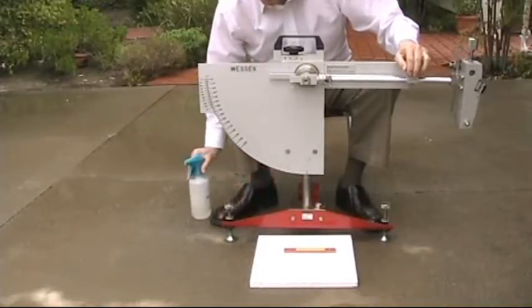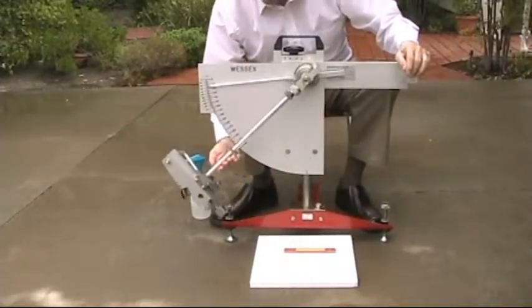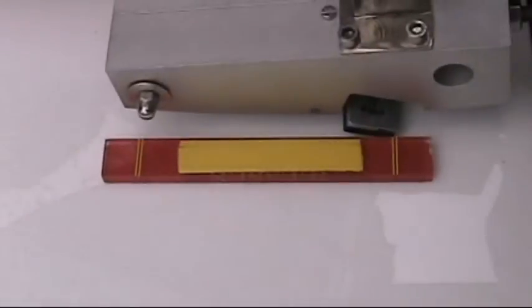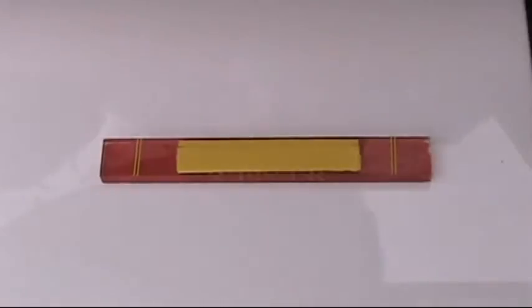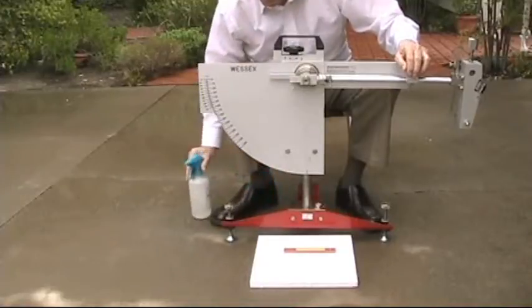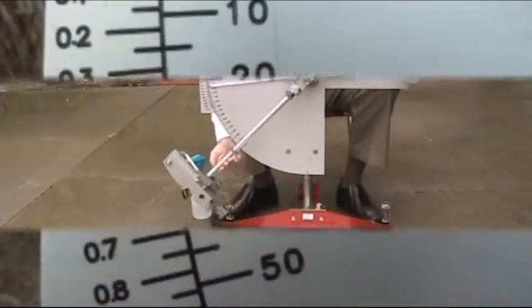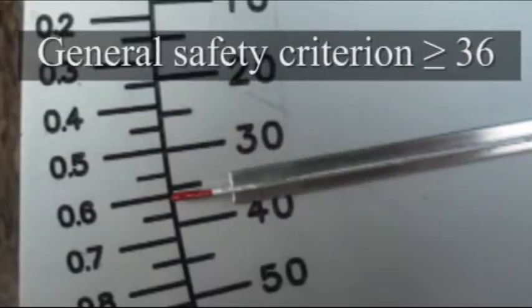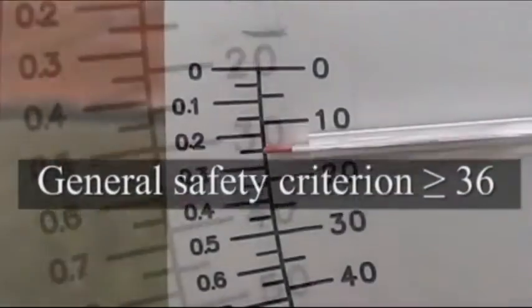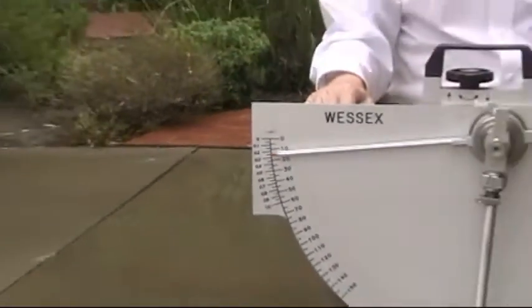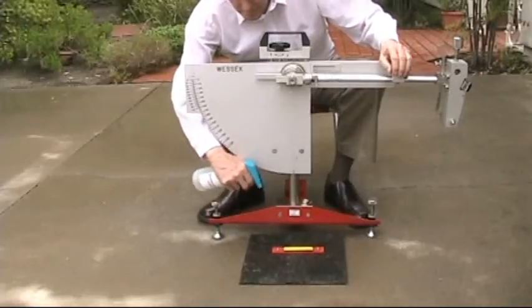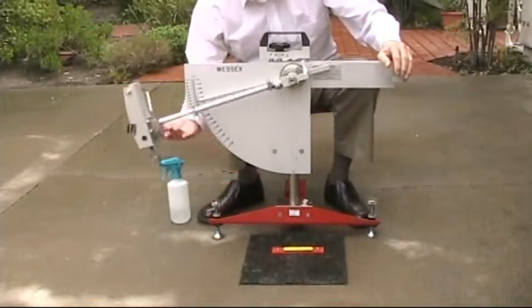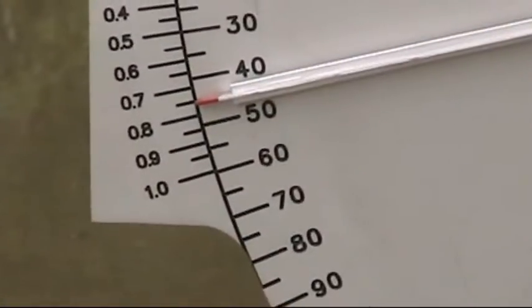This is the pendulum method, which is a national test standard in at least 49 nations. The slider is set up to travel across the flooring for 124 to 126 millimeters, which is approximately 5 inches. Push the button and we get a reading on the scale. Generally speaking, a pendulum test value of 36 is the minimum safety threshold. Here we get a 15 on the pendulum, which is telling us this tile is very slippery when wet. On the granite, we get 45, which equates to quite anti-slip.